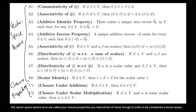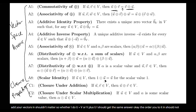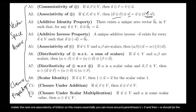The first one is commutativity of addition, which means the order you add your vectors in shouldn't matter. Whether you do u plus v or v plus u, you should get the same answer. The next one is associativity of addition — you can move around parentheses. Doing u plus v, then plus w, should be the same as doing v plus w first and then adding u. Basically, the order that you add in shouldn't matter.